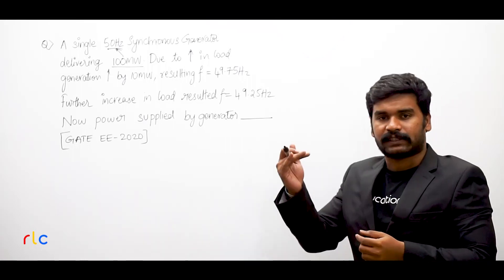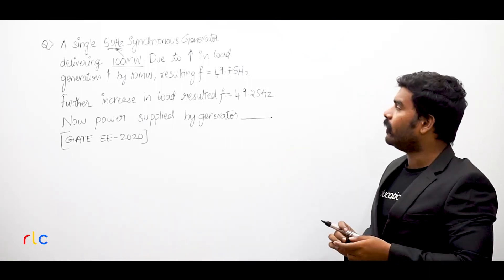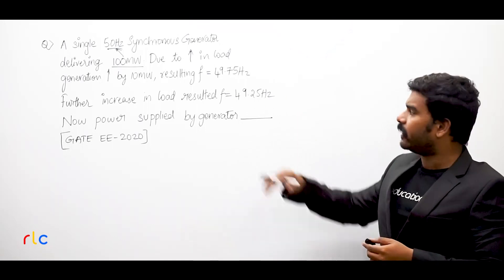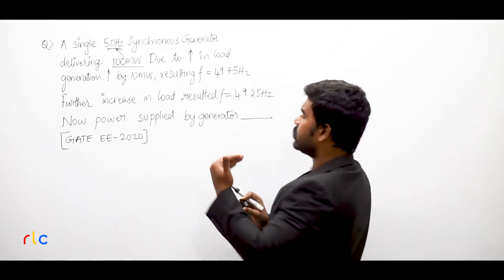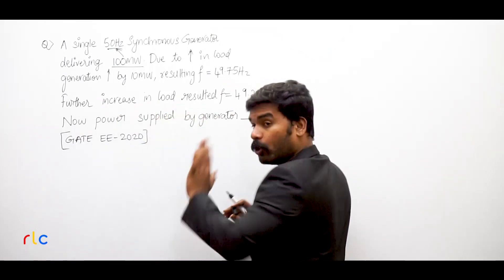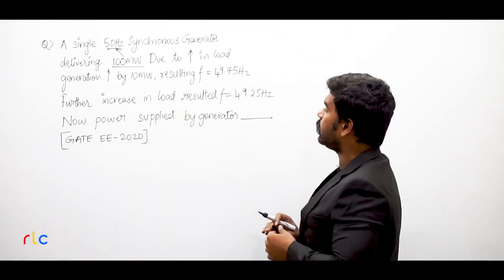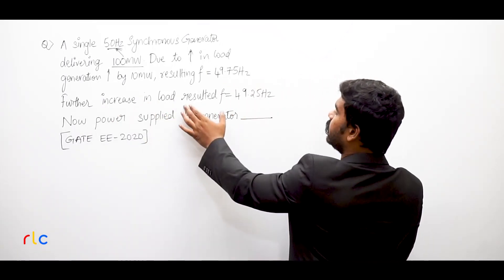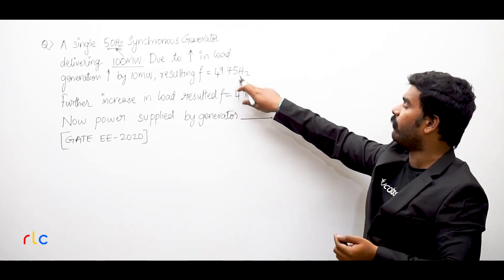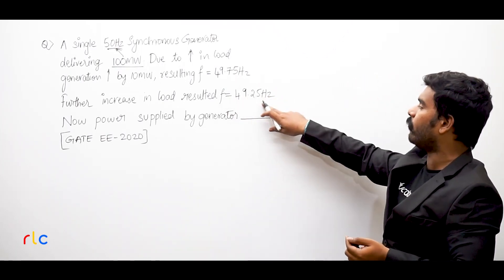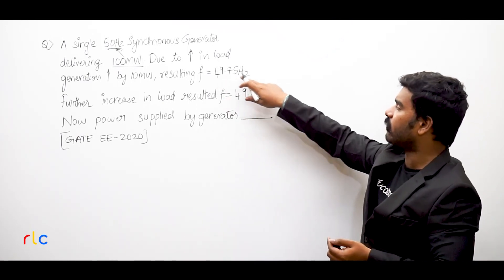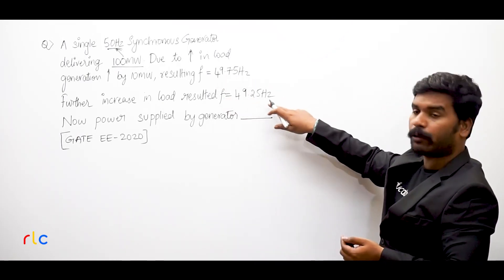Of course, if the load increases, the speed of the rotor will try to decrease and hence the frequency will decrease. With a further increase in load the frequency drops further, resulting in a frequency of 49.25 Hz.